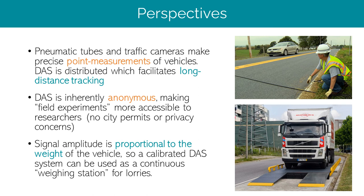Let's consider some perspectives for DAS in traffic analysis applications. Currently, pneumatic tubes and traffic cameras are commonly used to gather traffic data — these measurements are very precise but made at a point in space. DAS, on the other hand, is distributed, which facilitates long-distance tracking of individual vehicles. This could be of interest for transient and short-term speed variations that could ultimately lead to traffic jams — behavioral observations that cannot be made with pointwise measurements. DAS is also inherently anonymous, as opposed to traffic cameras, making field experiments easier with no city permits needed and no privacy concerns. Additionally, the signal amplitude is proportional to the weight of the vehicle, so a calibrated DAS system can serve as a continuous on-demand weighing station for lorries.